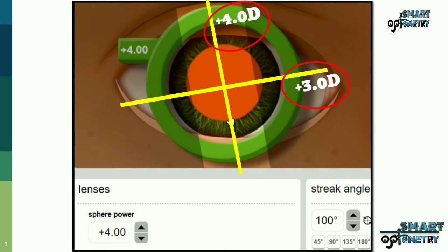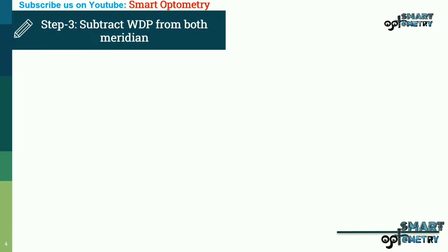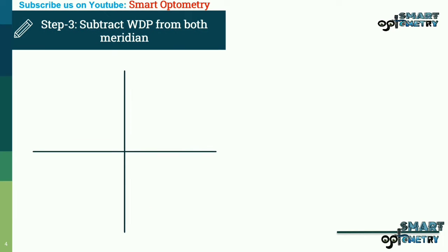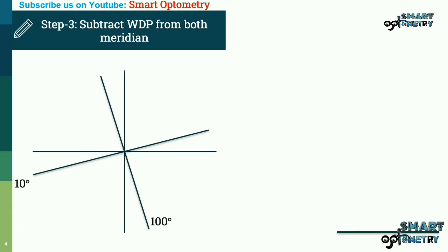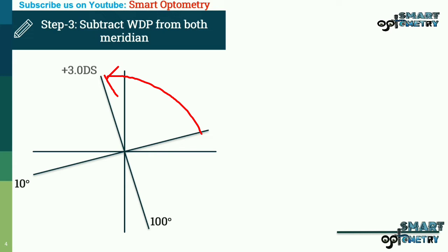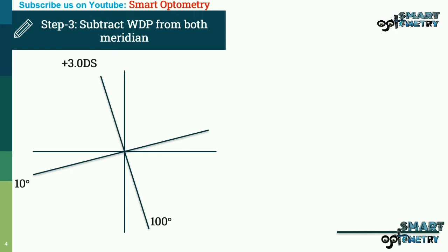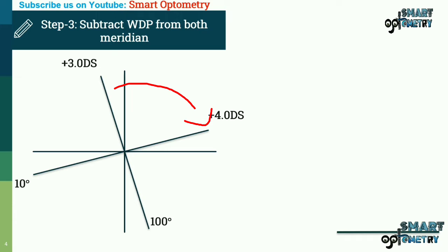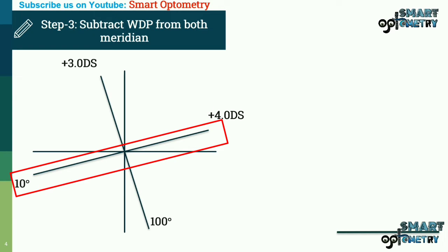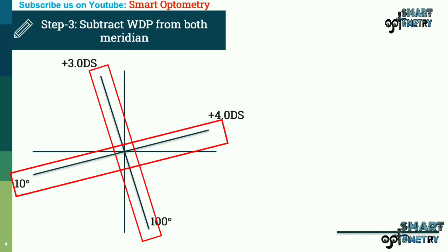Now let's move to our next step. We will draw an optical cross and distribute the power meridian-wise. This is our optical cross. 10 degrees will be here and 100 degrees will be here. So in 10 degrees we had plus 3, and the power will be placed 90 degrees apart. In 100 degrees we had plus 4, placed 90 degrees apart. So in this meridian we have plus 4, and in this meridian we have plus 3.